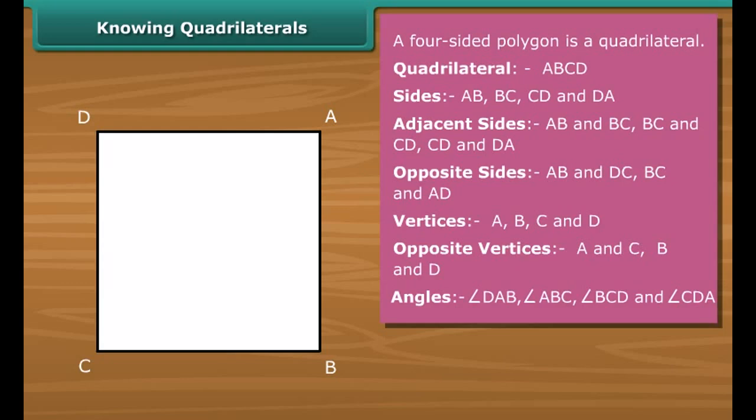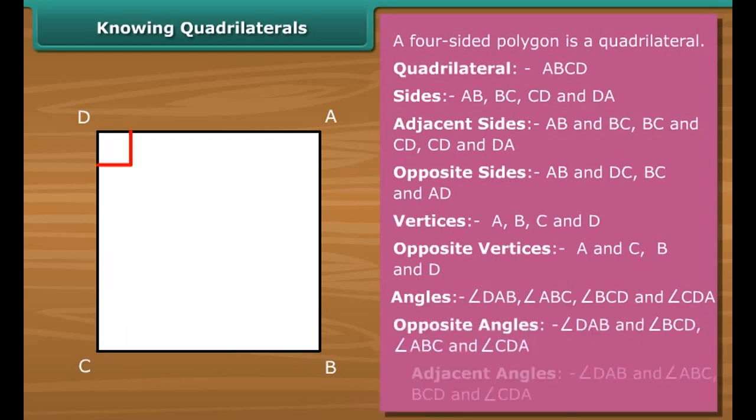The four angles of a quadrilateral are angle DAC, angle ABC, angle BCD, and angle CDA.